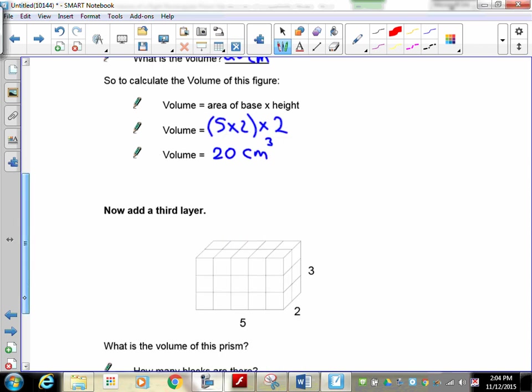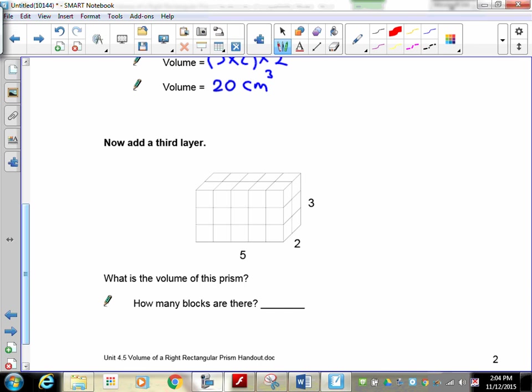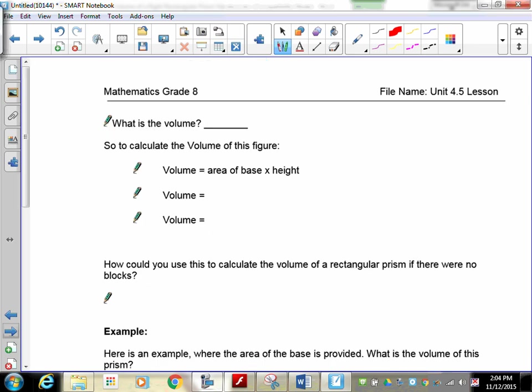So add a third layer now and pause. How many blocks do we have now? We know that one layer has 10, another layer has 10, and the final layer has 10, so we have 30 centimeter cubes or 30 blocks.